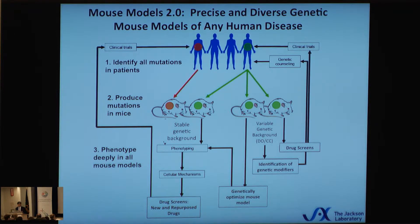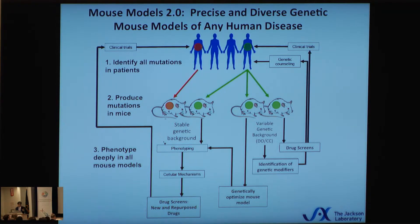Mouse models 2.0 at JAX are precise, diverse genetic models of any human disease, following this paradigm: we identify all mutations in a patient with a disease, we construct these mutations individually or in combinations in mice — either in a stable genetic background of a pure inbred strain, or in highly variable genetic backgrounds like DO and CC — to then test the effects of genetic background, which we can experimentally extract post hoc. We then do extensive phenotyping. We have just completed construction of a $21 million phenotyping facility in Bar Harbor. By extracting individual progenitor cells from the brain or heart, we can do drug screening in cells and feed back to the models and to clinical trials.